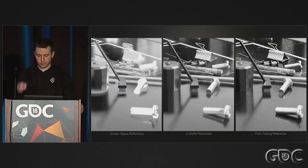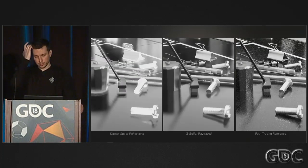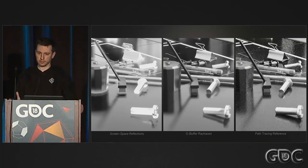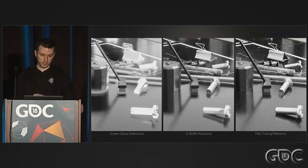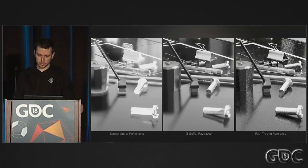Here's another example. Everything feels much more grounded when you remove those sampling artifacts — especially if you look at the paperclip in the middle, you can see how the rays just make sense, and our results look really close to path tracing.